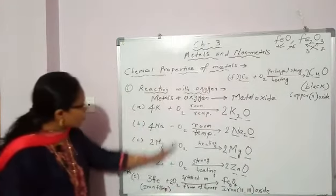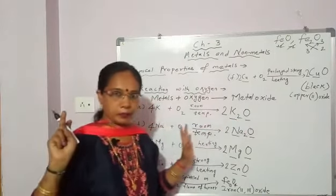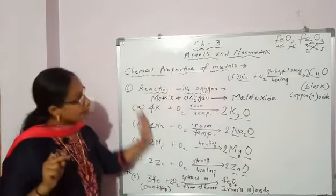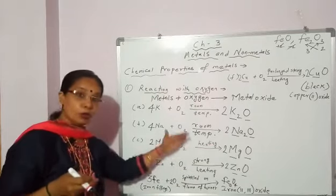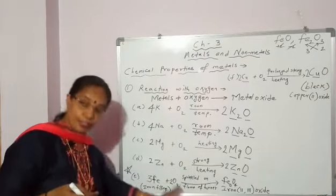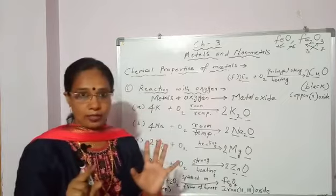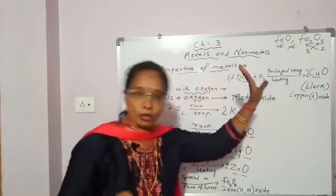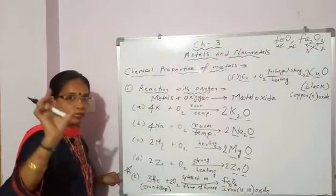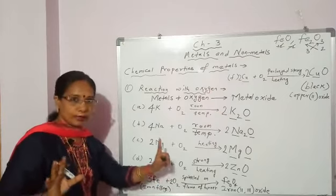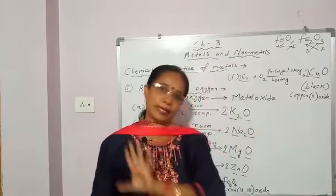So what we have seen: when metals react with oxygen, metal oxide is formed. More reactive metals react at room temperature, but as reactivity decreases you have to heat, then heat strongly, then heat for a long time — only then will they react with oxygen. But the product formed is metal oxide in all cases. For iron there is a slight difference in the type of oxide formed, so keep that in mind. Metals react with oxygen and metal oxide is formed.